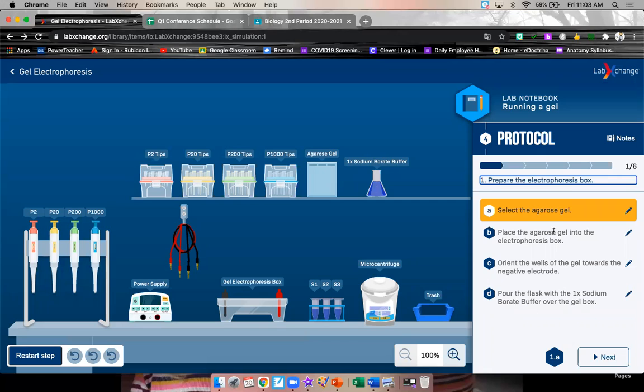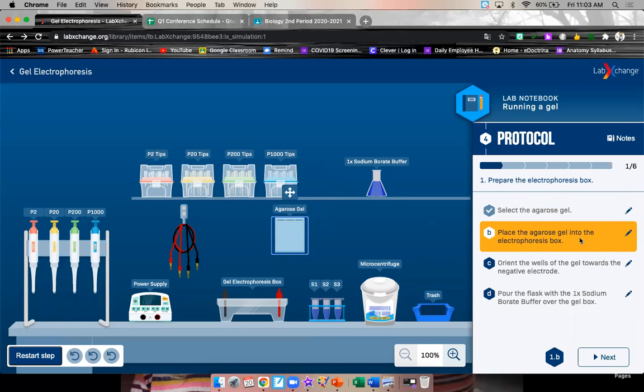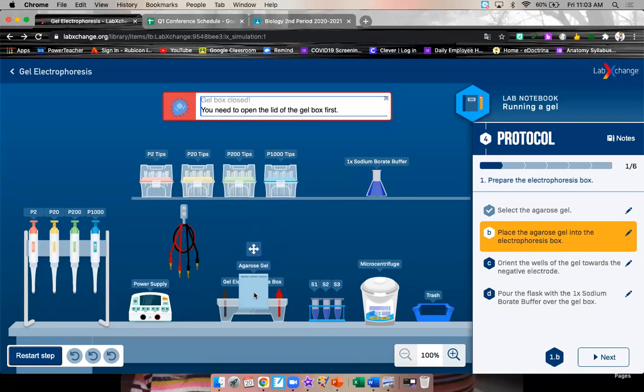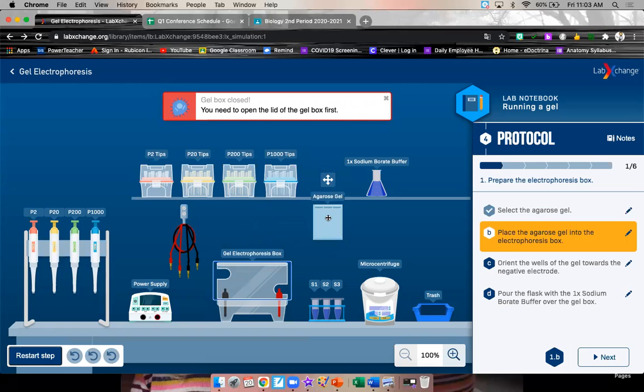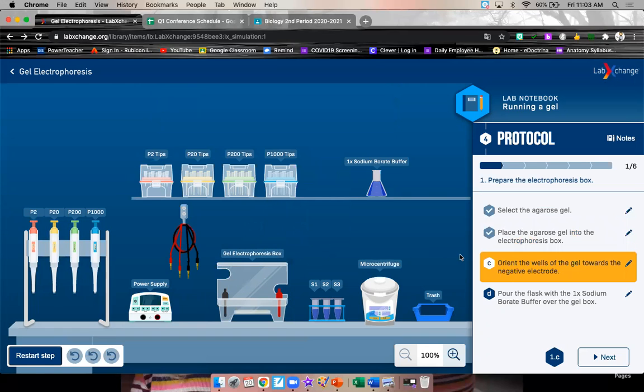Your directions are on the side. At this point, if you are comfortable just reading through the directions on your own, then you can turn off this video and just follow the directions. If you would like me to walk you through it, stick around. A, select the agros gel. Right here, the agros gel. B, place that agros gel into the electrophoresis box. Just drag it in. Oh, we need to open the lid. C, orient the wells of the gel towards the negative electrodes.